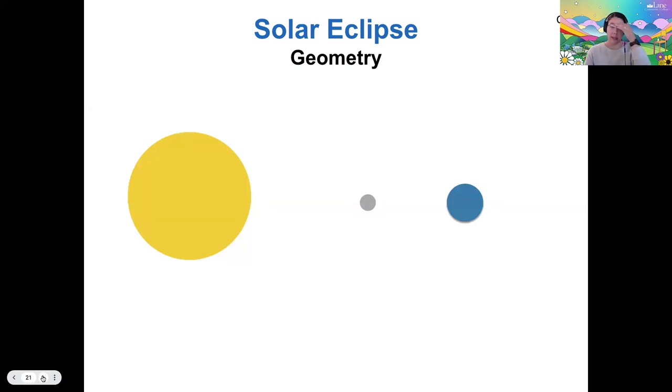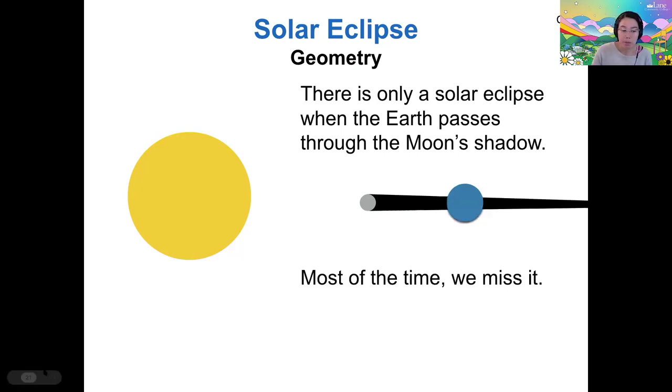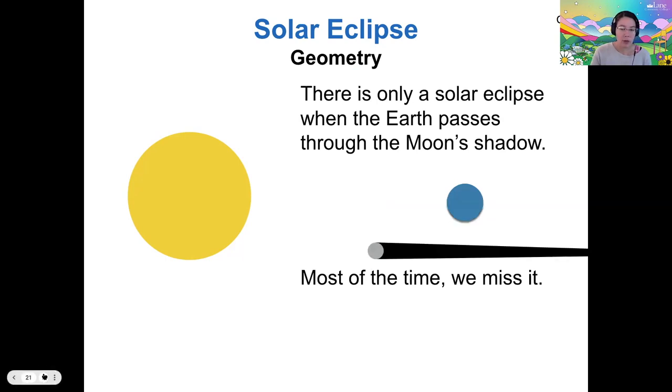We can understand the geometry of a solar eclipse this way. This solar eclipse can only happen when earth passes through the moon's shadow. Most of the time we actually don't get a solar eclipse, so we don't get a total solar eclipse during every single new moon.